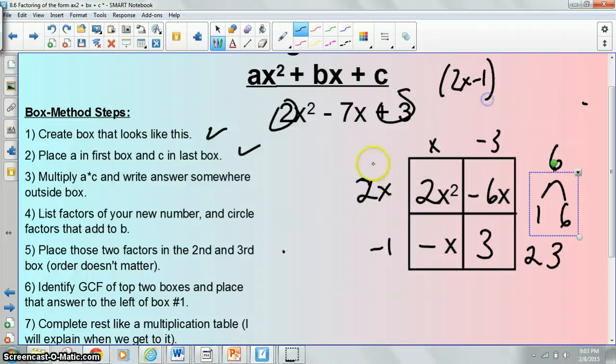x times what is negative x? That would be negative 1. As your check, this needs to be true and sometimes it won't be. Is negative 3 times negative 1 equal to 3? It sure is. So our answer is 2x minus 1 and x minus 3. It does not matter if you wrote x minus 3 first and 2x minus 1 second. It's multiplication so you can change the order.